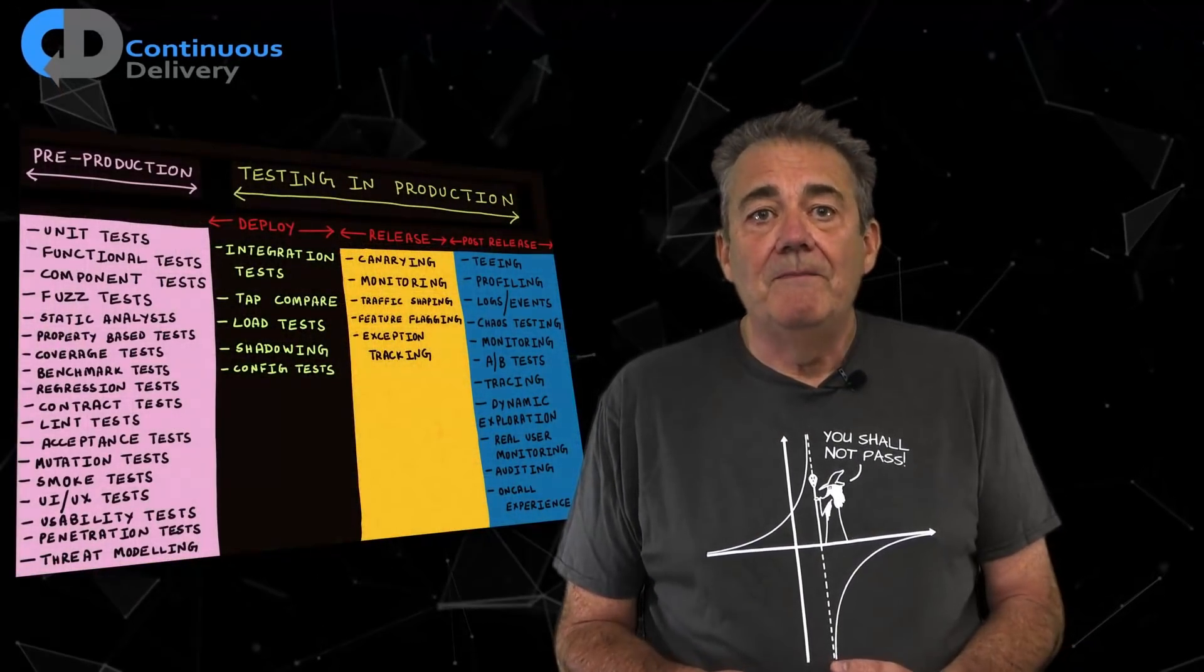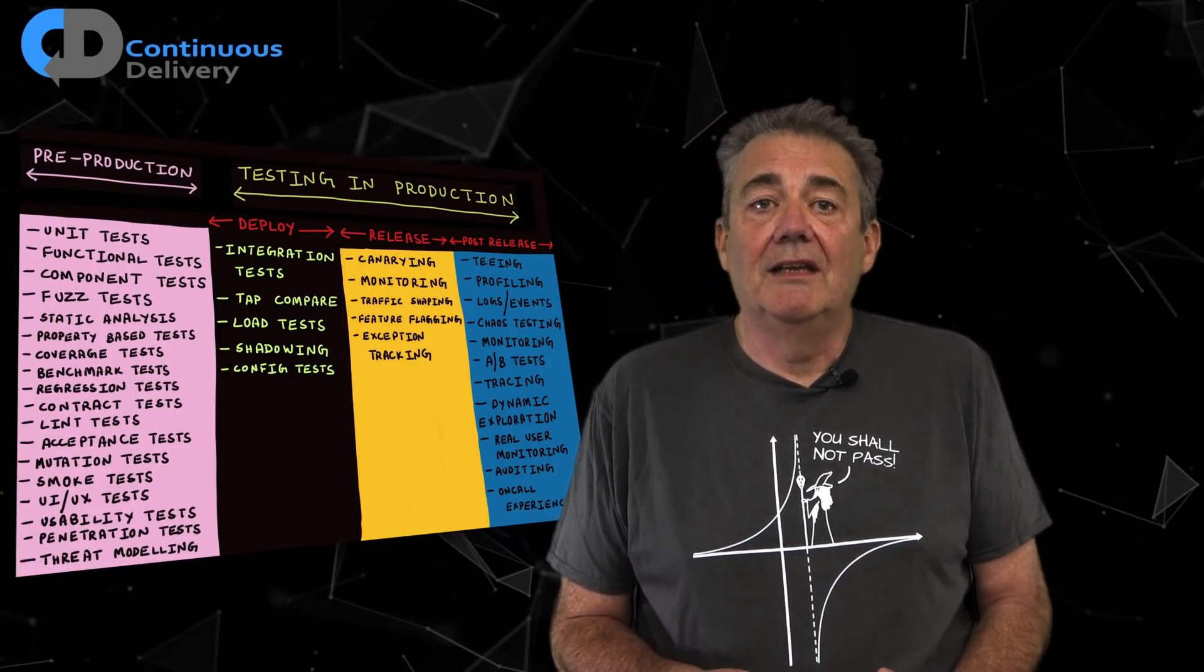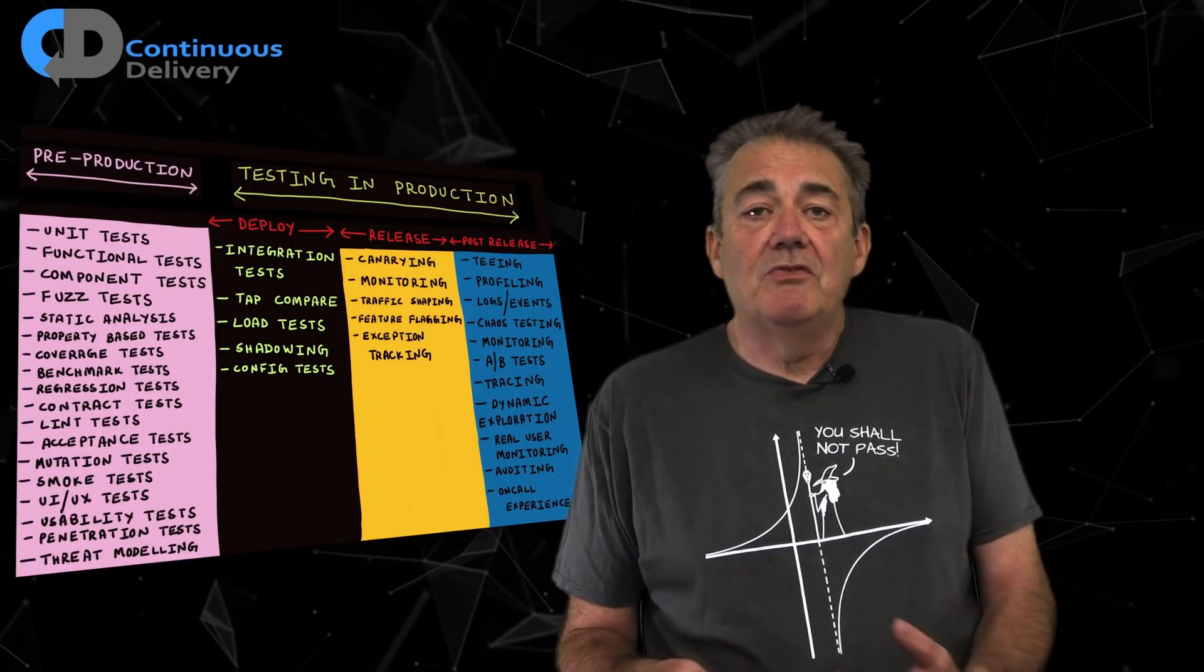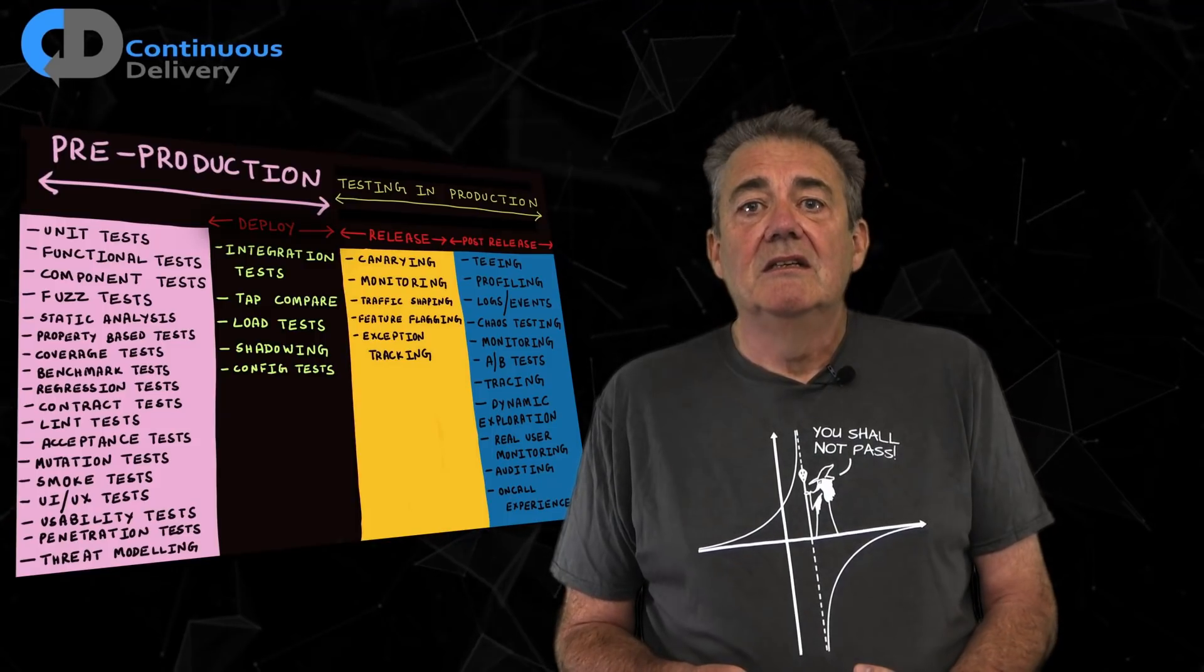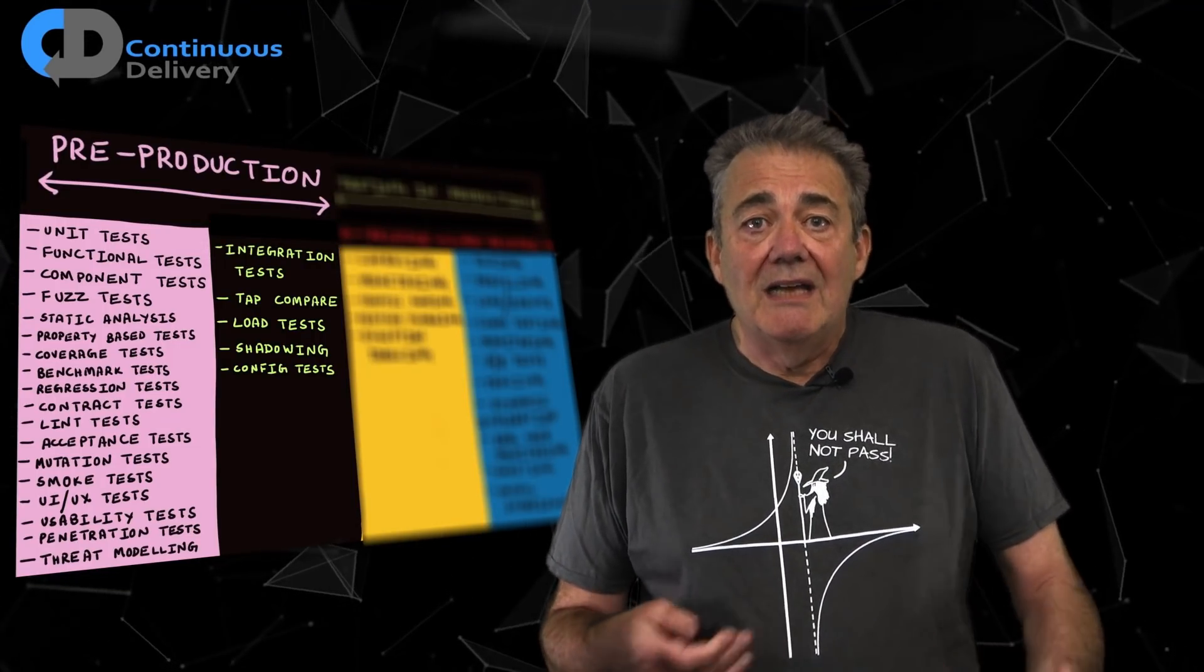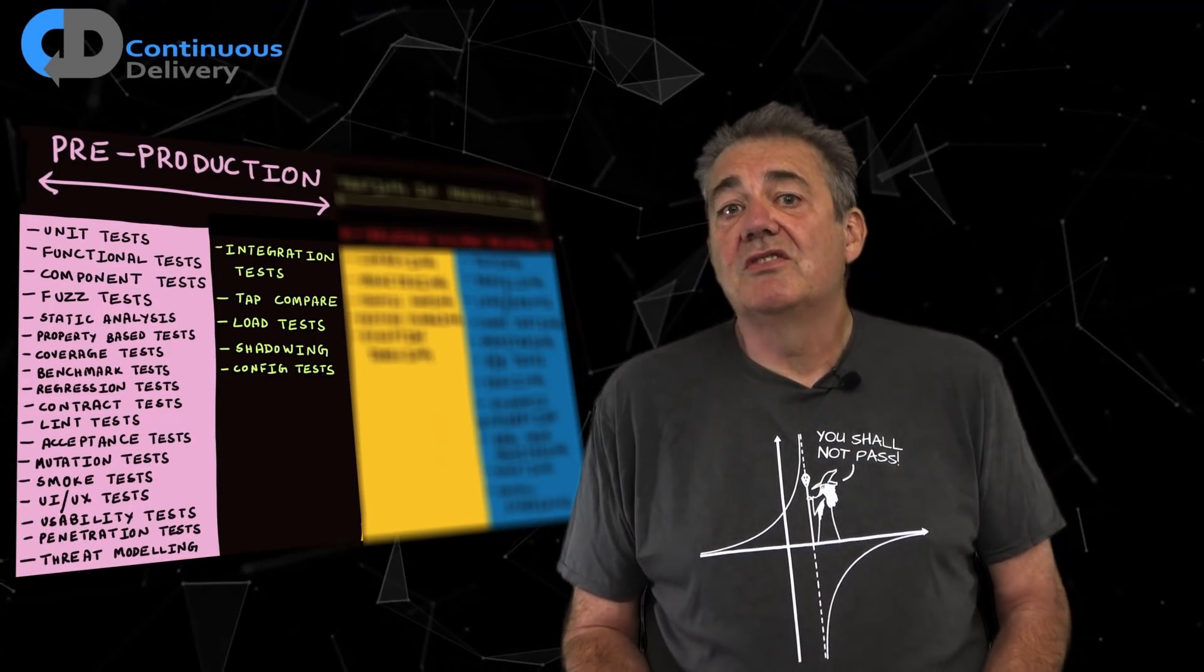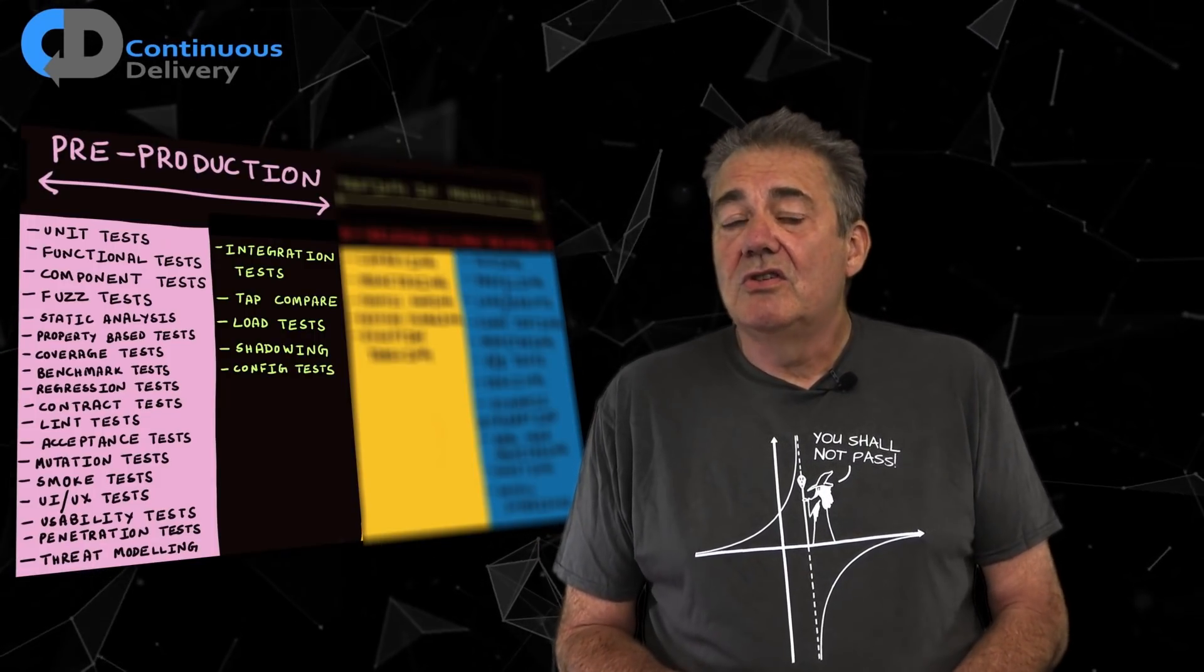In an excellent blog post testing in production the safe way, Cindy Sridharan shows this diagram. I think it's a good model, though I disagree with it slightly. I'd move the boundaries a bit more like this. You can test these things in a test environment, and in a continuous delivery context at least, for more consequential software, I think that you should.